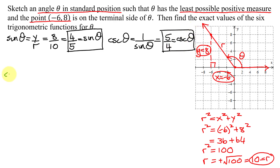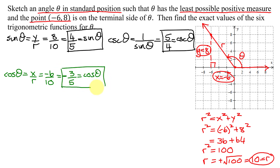Next, the cosine of theta in terms of x, y, and r is x over r. X is negative 6, r is 10. A negative divided by a positive is a negative. Both reduce by 2, giving negative 3 fifths. So the cosine of theta is negative 3 fifths. The reciprocal of cosine is secant, so the secant of theta is the reciprocal of negative 3 fifths, which is negative 5 thirds.